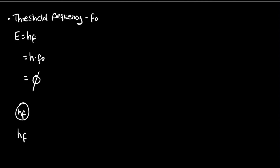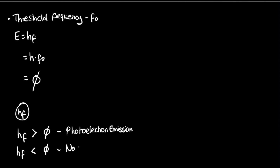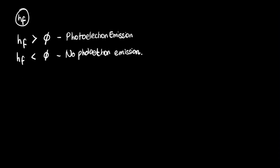So if hf is greater than phi, then we have photoelectron emission. If hf is less than phi, then we have no photoelectron emission — this is the condition required for the photoelectric effect. If hf is greater than phi, there is going to be some leftover energy after the photon transfers all its energy to the electron.